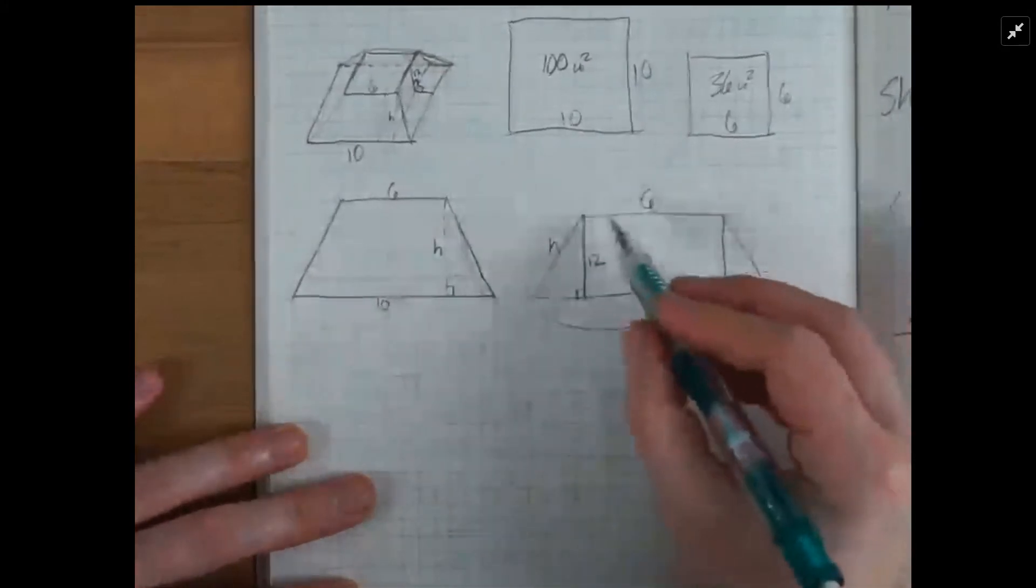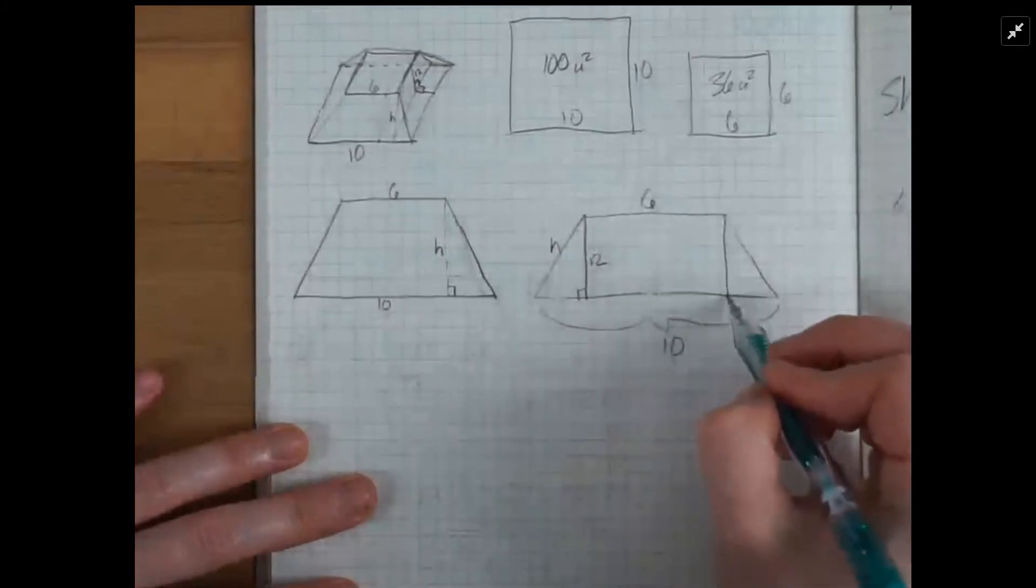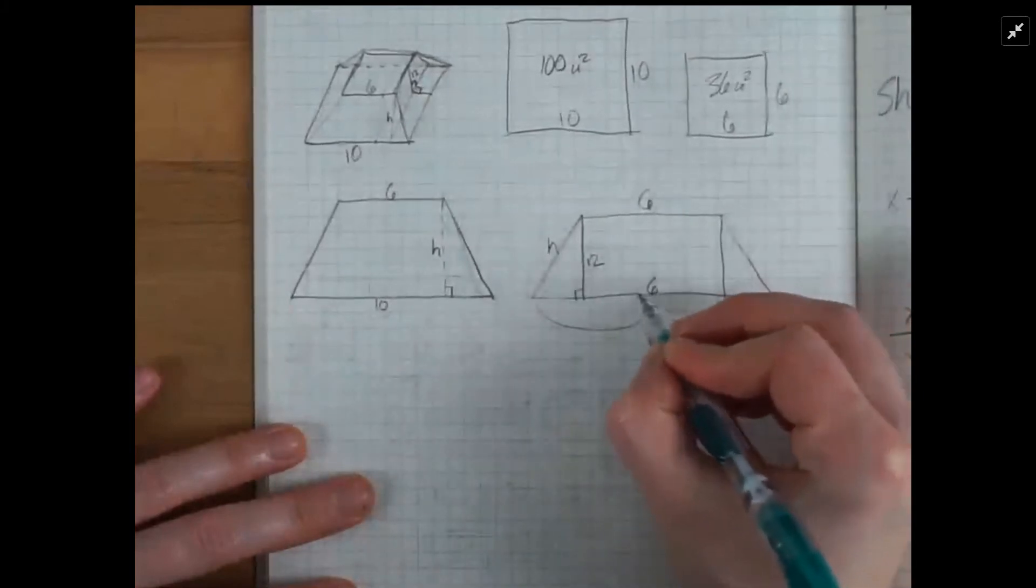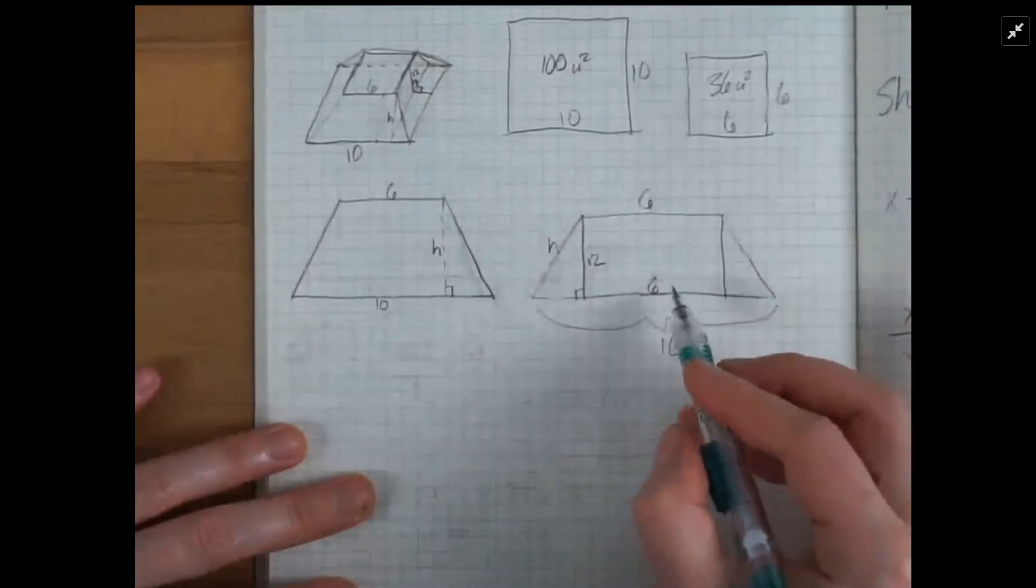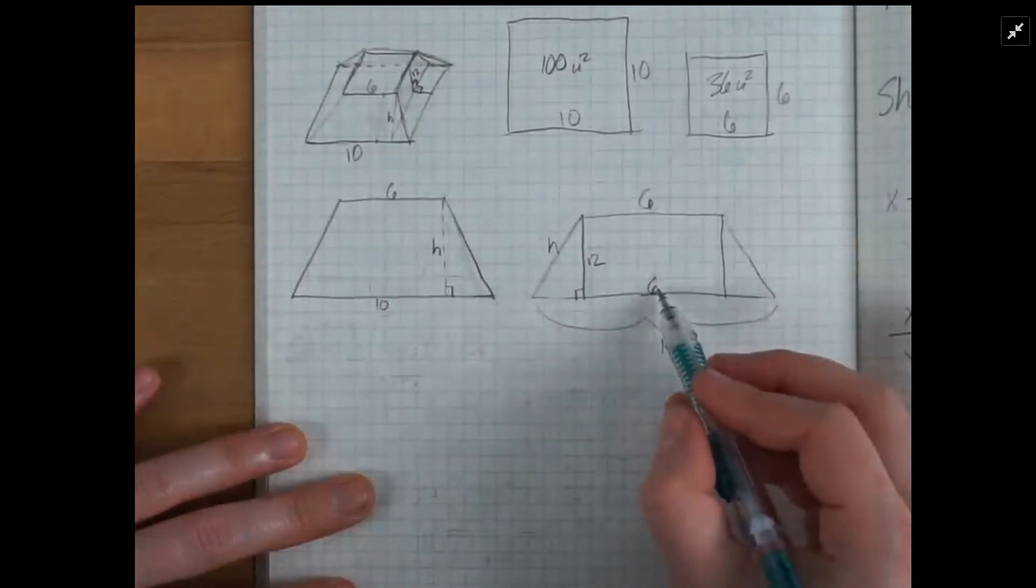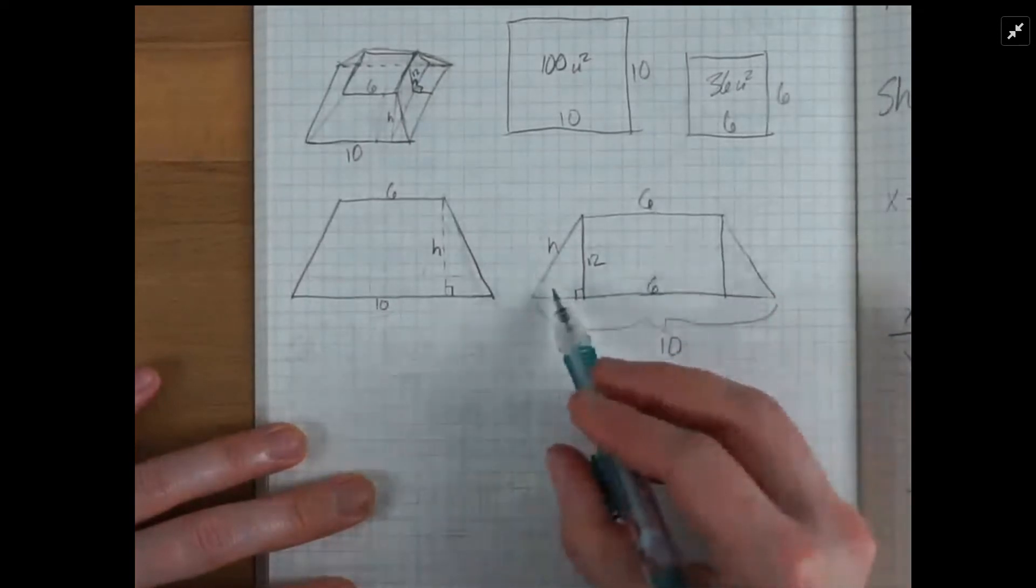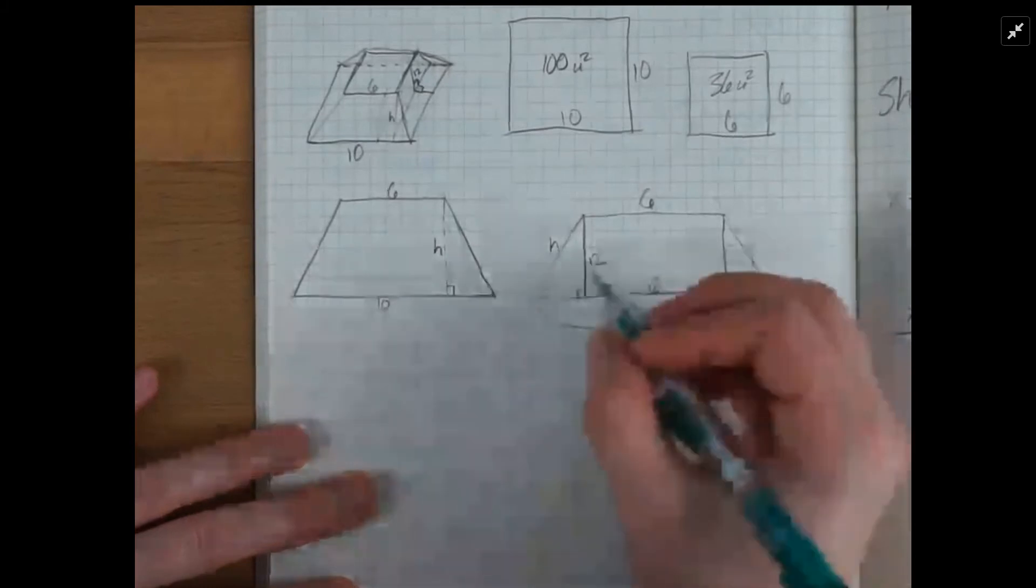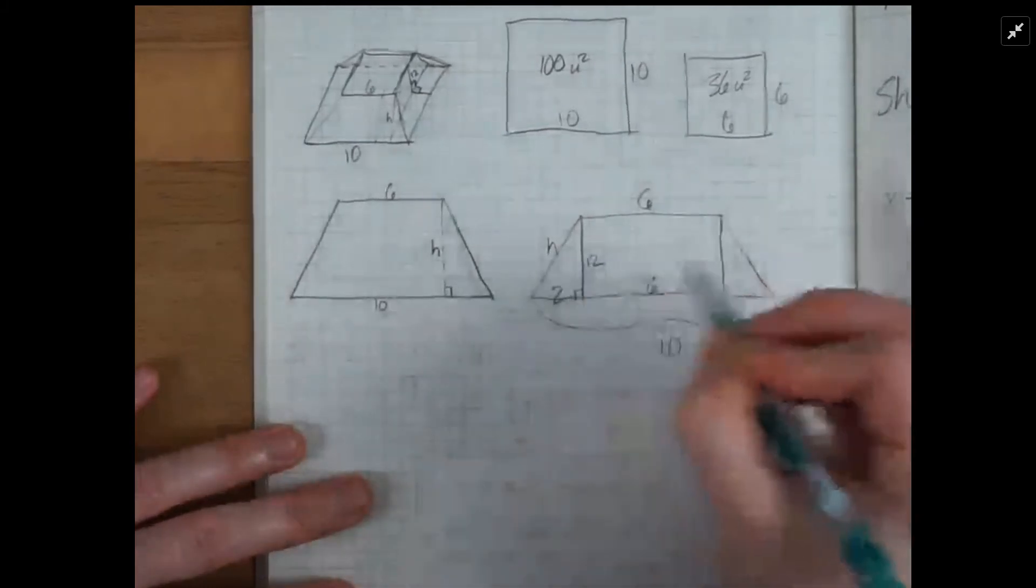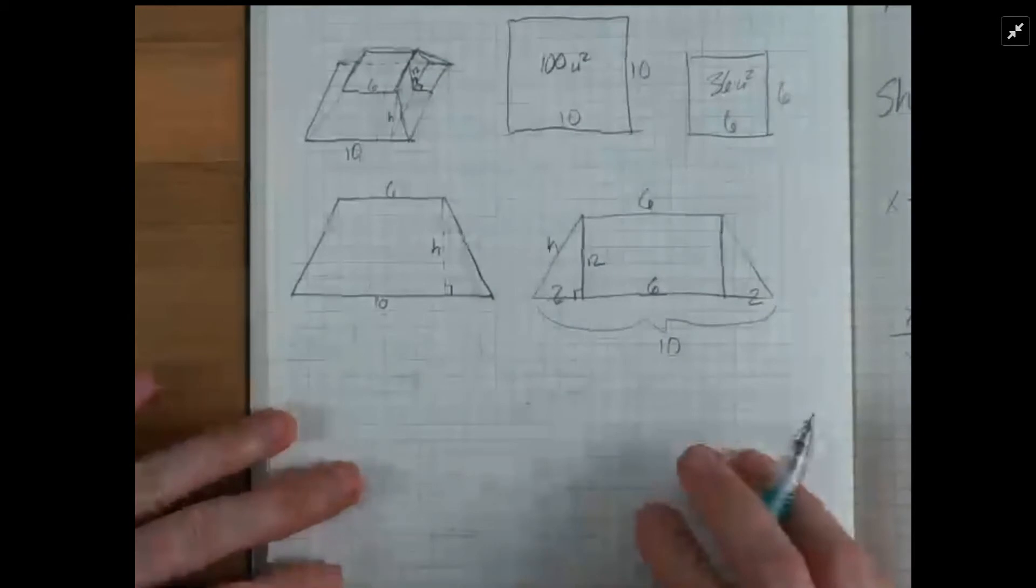And we can bring vertical lines down here to say that this middle section is 6. So 10 minus 6 leaves 4, and that's evenly distributed to either the other side of the base. So we have 2 on one side and 2 on the other.